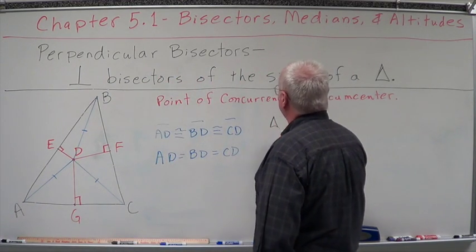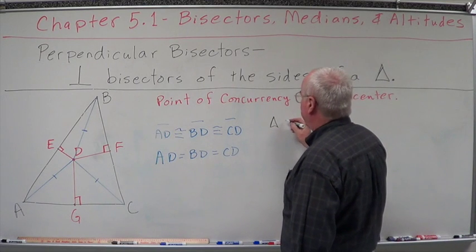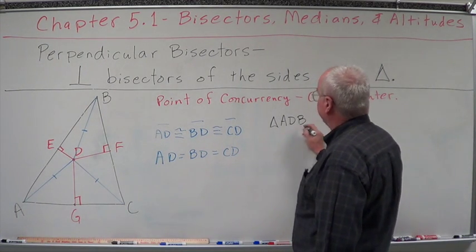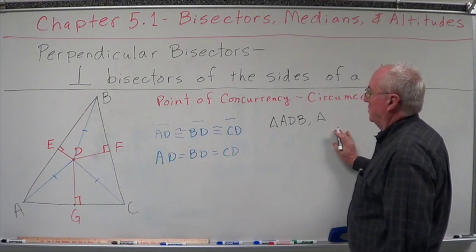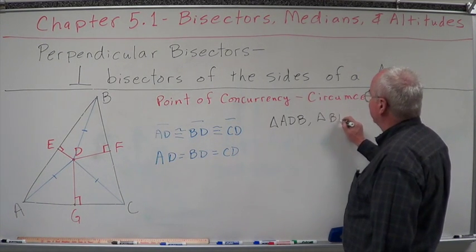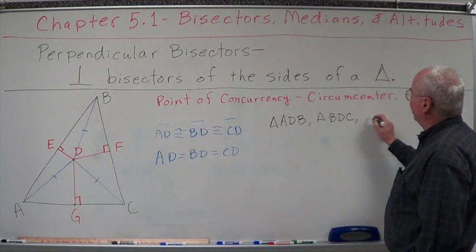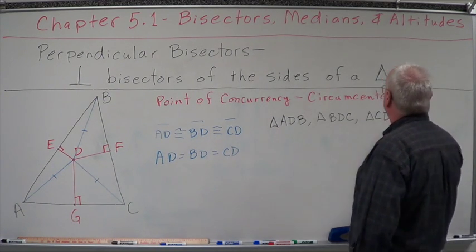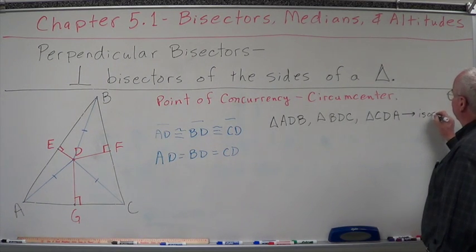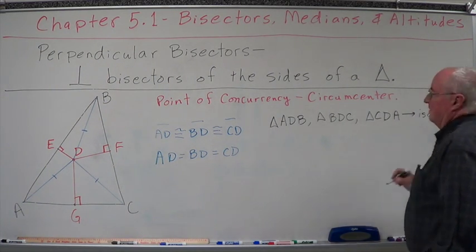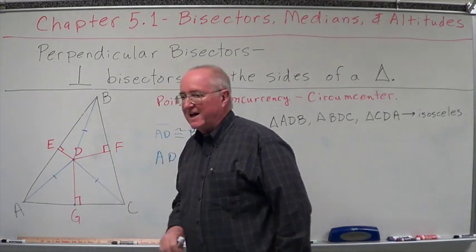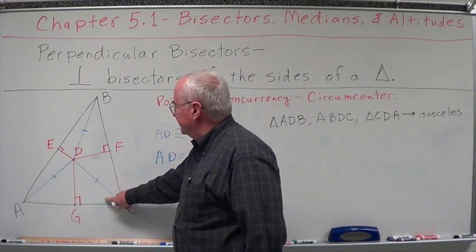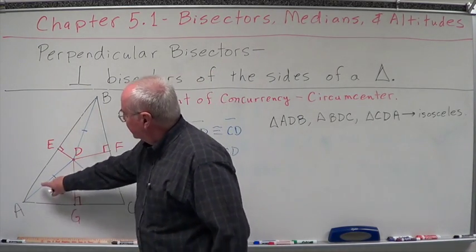If these are congruent, let's draw some other things. That means that triangle ADB, triangle BDC, and triangle CDA are isosceles. I have two sides that are congruent, so therefore they're isosceles triangles. That means that this angle is congruent to this angle, this angle is congruent to this angle, and this angle is congruent to that angle.